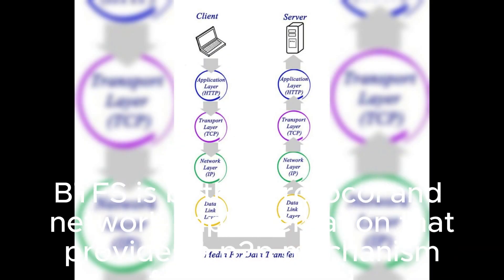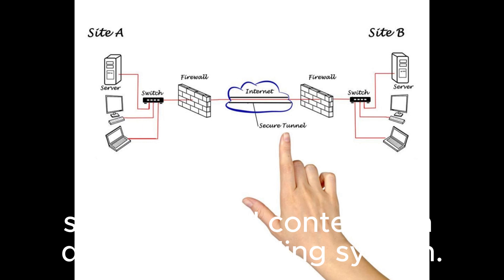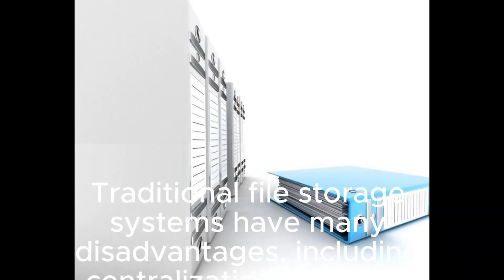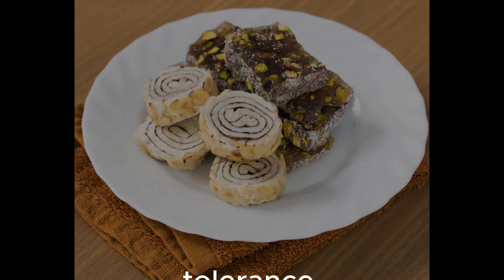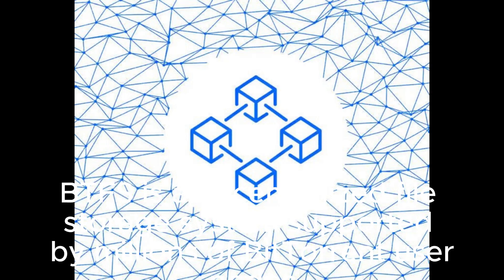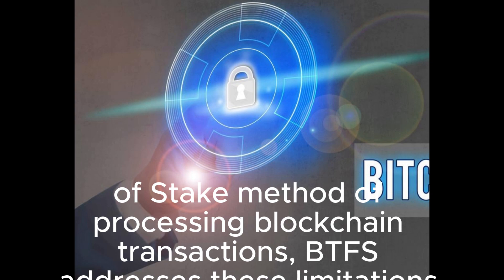BTFS is both a protocol and network implementation that provides a P2P mechanism for storing and sharing digital content in a decentralized filing system. Traditional file storage systems have many disadvantages, including centralization or control by a single entity, the ability for governments to censor, higher costs, and low fault tolerance. BTFS is a decentralized file storage system supported by millions of BitTorrent user nodes, running on the blockchain with a delegated proof-of-stake method of processing blockchain transactions, which addresses these limitations.